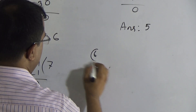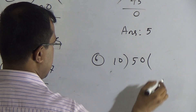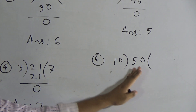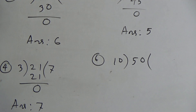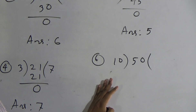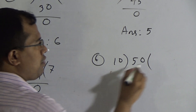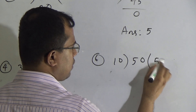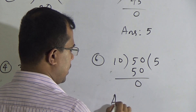Dear students, now we will do number 6: we will divide 50 by 10. Total 50 chocolates distributed among 10 students, so I will recite the times tables of 10: 10 ones are 10, 10 twos are 20, 10 threes are 30, 10 fours are 40, and 10 fives are 50. If we give 5 times, then 10 fives are 50. Now 50 minus 50 equals 0, so the answer is 5.